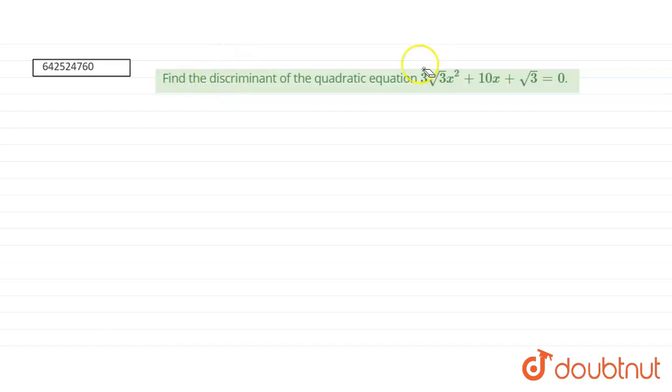Find the discriminant of the quadratic equation 3 root 3 x square plus 10 x plus root 3.